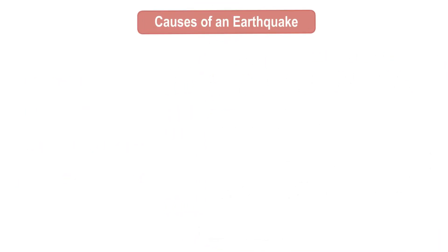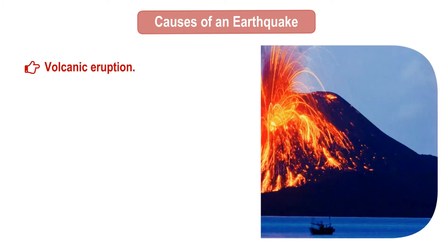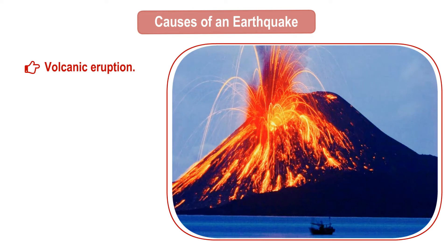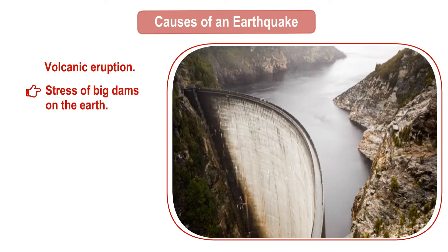Causes of earthquake. First, volcanic eruption: most earthquakes are caused because of the movement of magma. The magma exerts pressure on the rocks until it cracks the rock, and every time the rock cracks, it makes a small earthquake. Second, stress of big dams on the earth: earthquake occurs because of the stress or weight of water on rocks in big dams. Water pressure created on the micro-cracks in the ground under and near a reservoir causes earthquake.